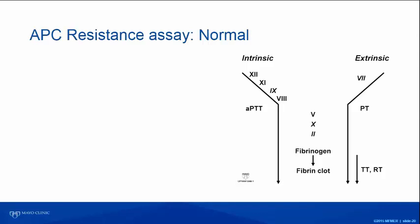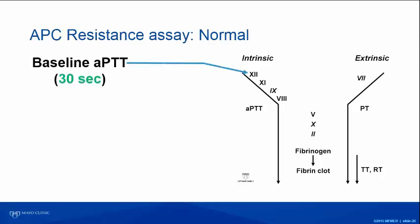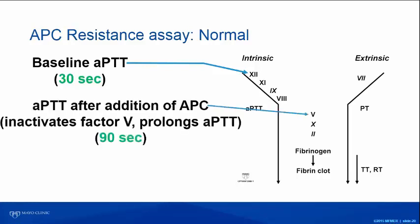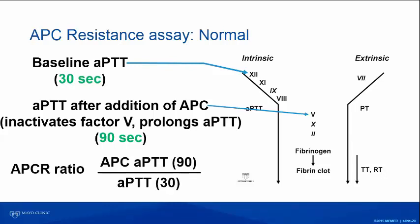The APC resistance assay is an APTT-based assay. We obtain a baseline APTT — say 30 seconds — then add activated protein C, which inactivates factor V and prolongs the APTT. We obtain a ratio: APC APTT over baseline APTT. In our lab, 2.3 is the cutoff; if the ratio is 2.3 or below, that's abnormally low and we proceed to Factor V Leiden testing.